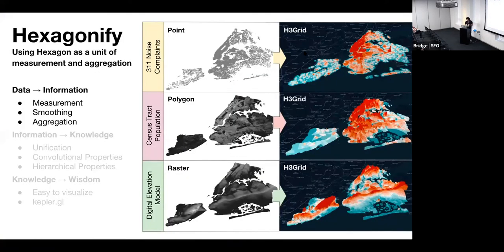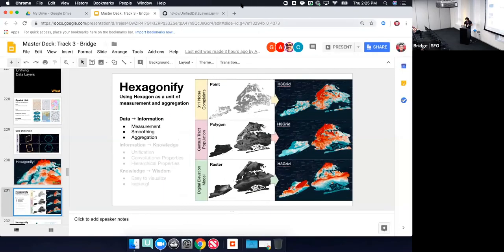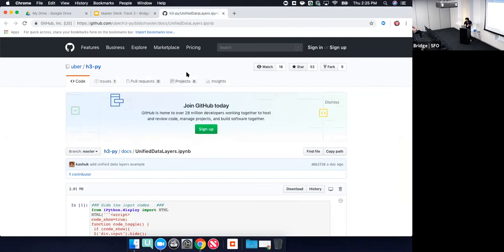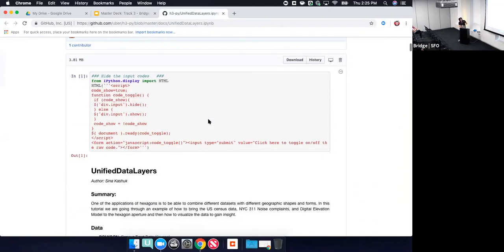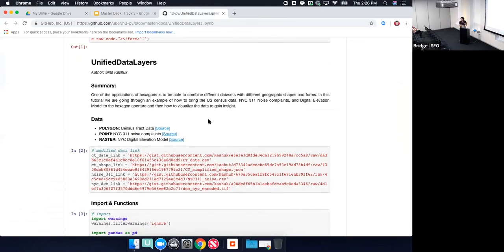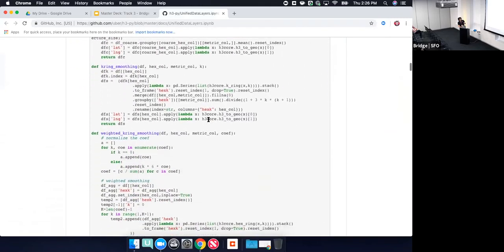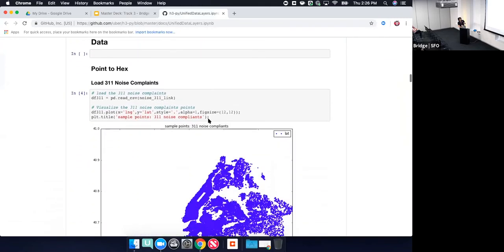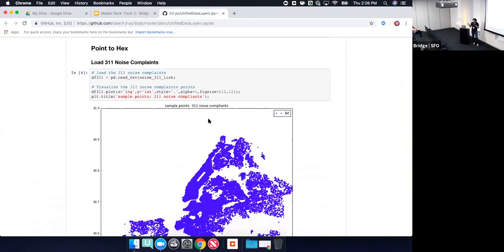So how we can hexagonify? Let me just quickly, my data scientist is supposed to show some code in my presentation. It doesn't make sense to not show. So I have a notebook which the link is at the end and you can go through it. Now this is, don't worry, don't worry. I'm not gonna, this is not a workshop. This is just showing what you can do.